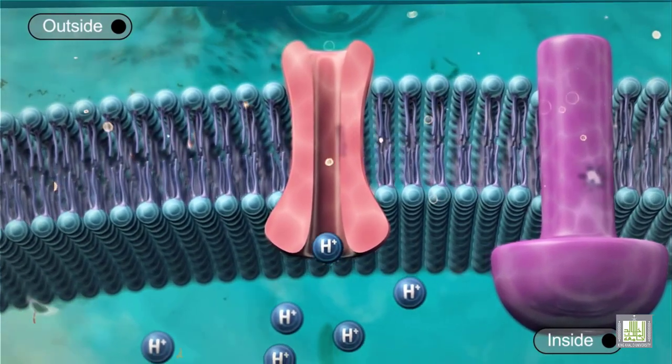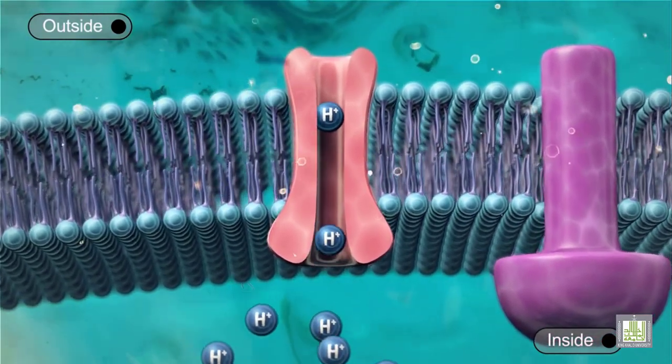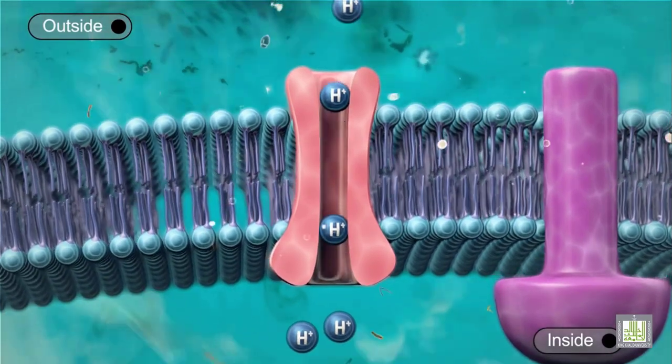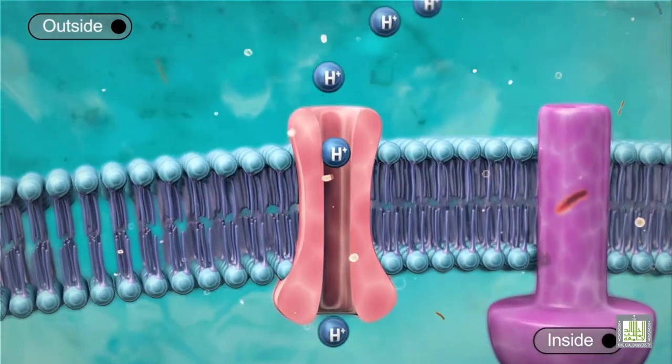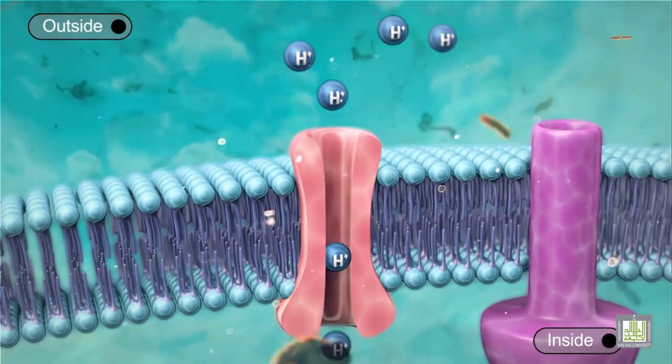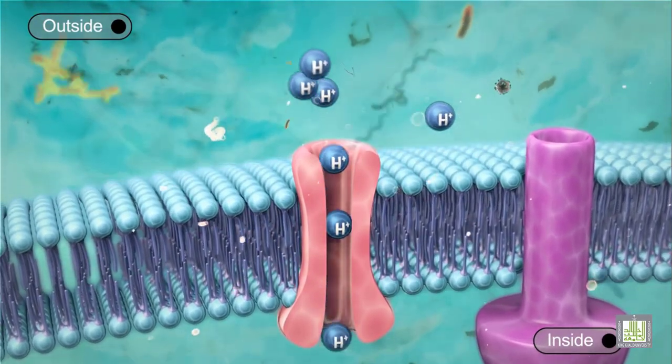The protons accumulate on the outside of the membrane, creating a concentration gradient. The membrane is not permeable to the charged hydrogen ions, and they cannot diffuse back across the membrane.